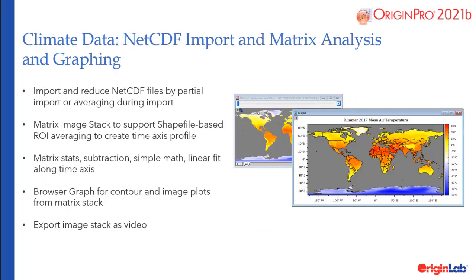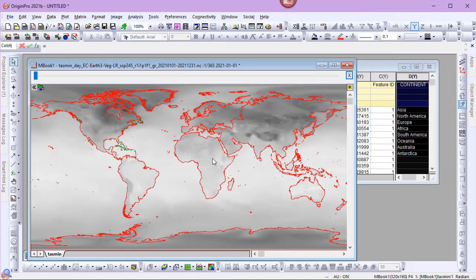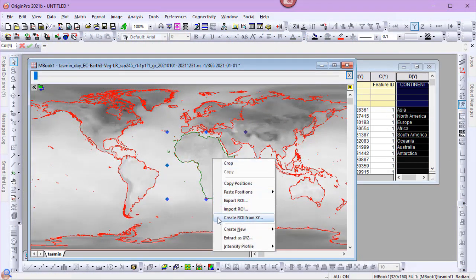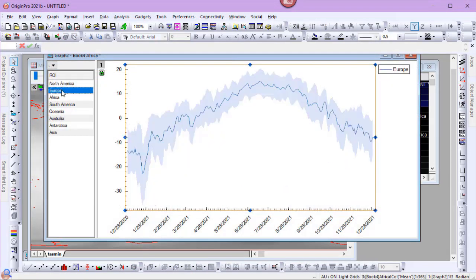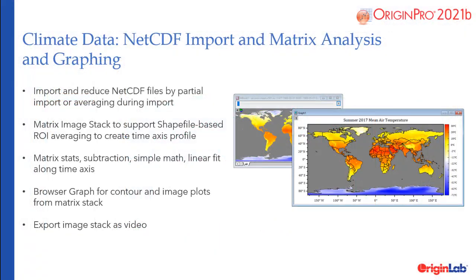Significant improvements have been made in 2021b for working with NetCDF climate data. These improvements include importing and reducing NetCDF files by partial import or averaging during import, matrix image stack support for shapefile-based ROI averaging to create time axis profiles, matrix stats, subtraction, simple math, and linear fit along the time axis, as well as matrix stack support for images. Browser graph for contour and image plots from matrix stack, and export of image stacks as video.